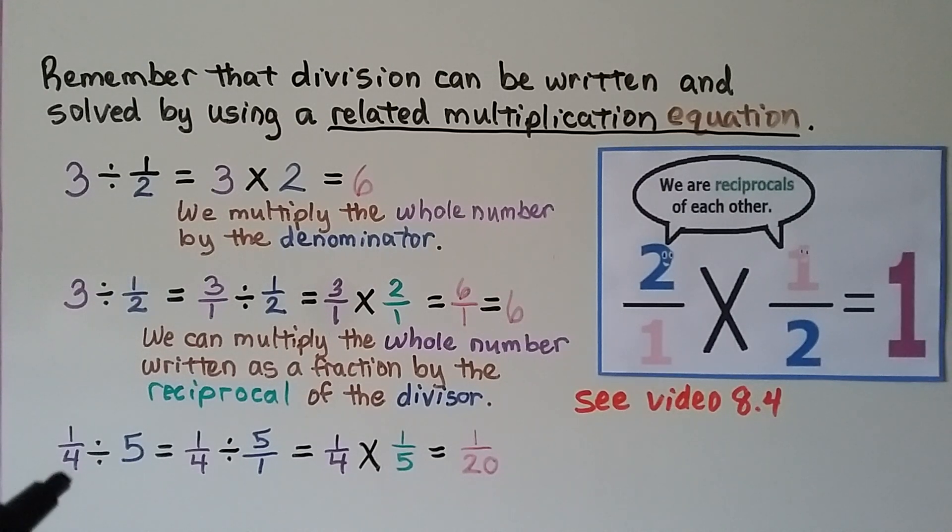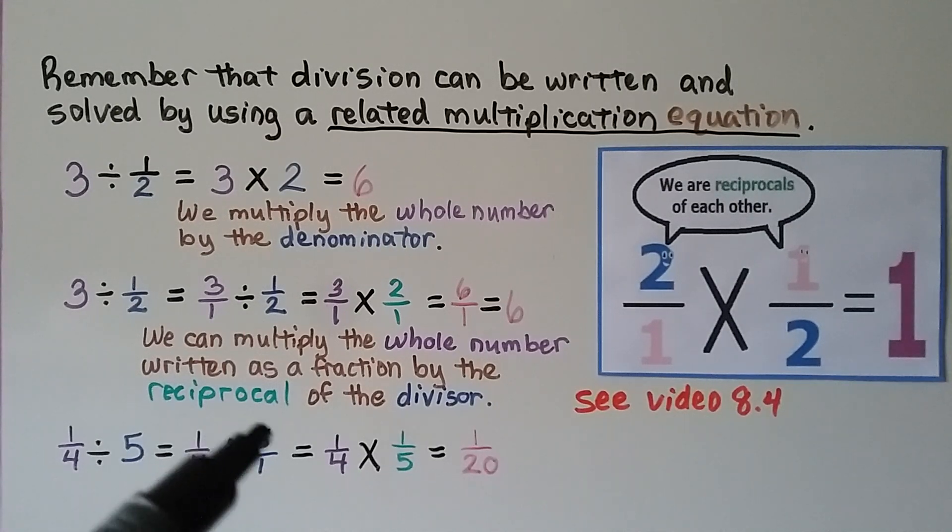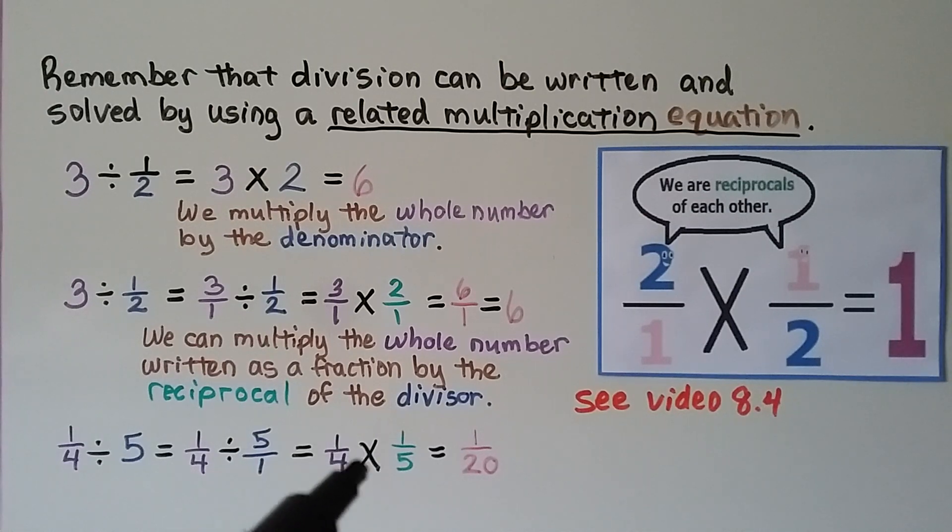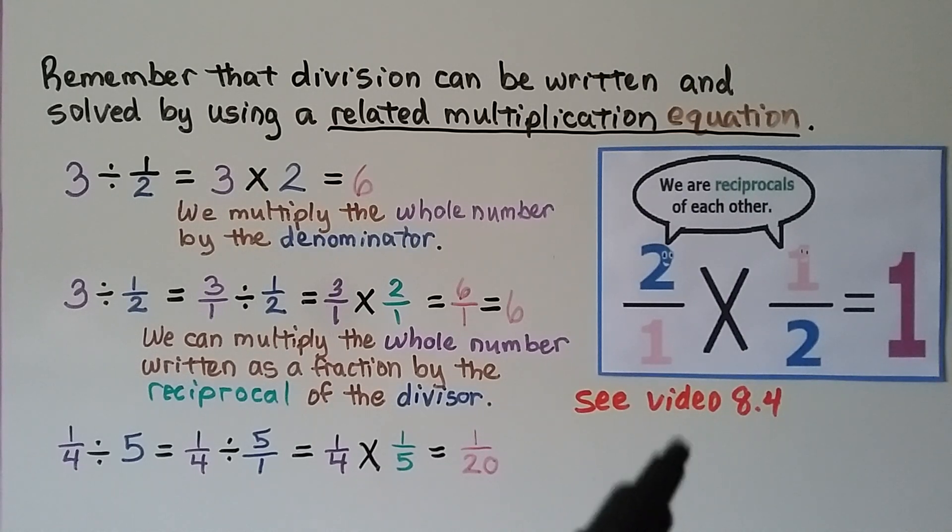If we have 1 fourth divided by 5, we can write it as 1 fourth divided by 5 over 1, making the 5 into a fraction. Then we can use multiplication and use the reciprocal of 5 over 1 as 1 fifth, and do 1 fourth times 1 fifth, which gives us 1 twentieth. Now, if this really confused you, it's very easy to just click the link in the description and watch that short video.